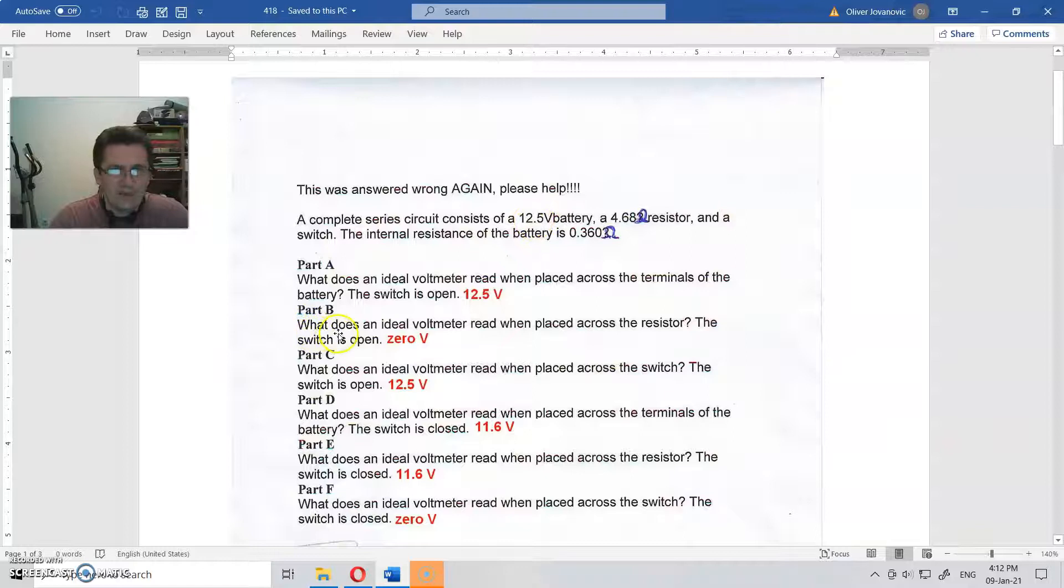Part B: What does an ideal voltmeter read when placed across the resistor? The switch is open. When there is no current throughout the resistor and you place a voltmeter, there is absolutely no volts. Why? If there was any, there would be a current, but there is no current. So there is zero volts.